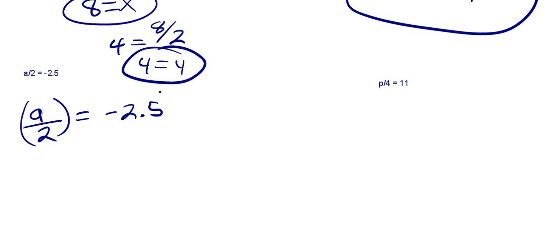Let's use our inverse operation. Since we've got this division sign here, we're going to multiply the bottom number, or both sides by the denominator, which is 2. These cancel out, so I'm just left with a is equal to negative 5. And that makes sense, because if I do negative 5 divided by 2, I get negative 2.5.